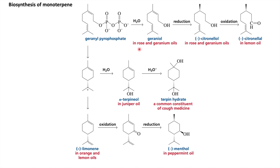From geranyl pyrophosphate, hydrolysis removes the two phosphate groups to give an alcohol group — geraniol, which is the major component of rose and geranium oil. Reduction of the double bond produces a chiral carbon, giving nerol/citronellol, also a main component of rose and geranium oil. Oxidation of the alcohol group to an aldehyde gives citronellal — 'al' indicates aldehyde, 'ol' indicates alcohol.